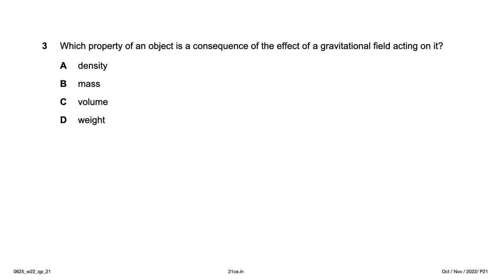Which property of an object is a consequence of the effect of a gravitational field acting on it? We have density, mass, volume, and weight. Weight is mass times gravity, so weight is a consequence of the effect of a gravitational field acting on the mass. We might think mass, but the gravitational field acts on the mass and the result is weight — so the answer is weight, option D.